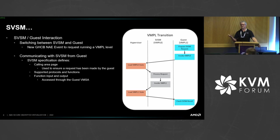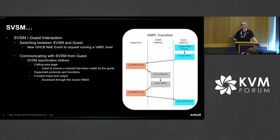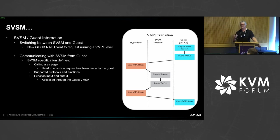The SVSM can look for the request from the guest, process the request, take any output generated as part of that request, put it back into the guest VMSA — the VMPL 1 VMSA — and then request the hypervisor to run VMPL 1. Now the guest is at VMPL 1 running again and it can check the results of the request and continue on. There is a calling area page used to communicate and verify that a request was actually made, so that the hypervisor can't try to run VMPL 0 all the time and trick the SVSM into doing something that's already been done.